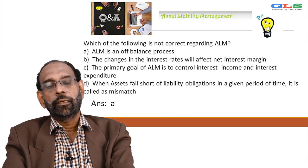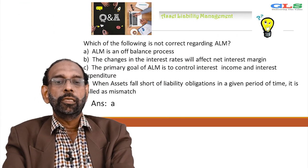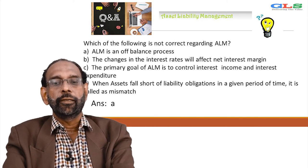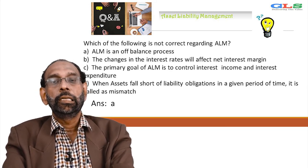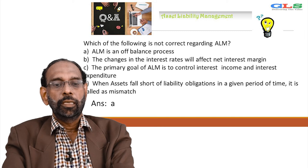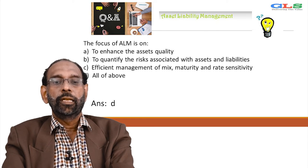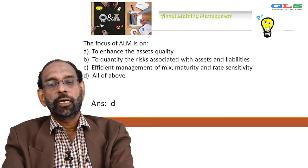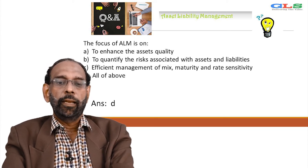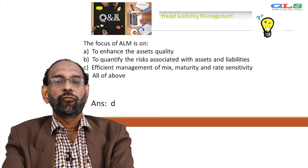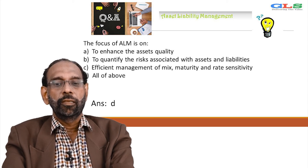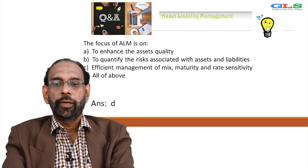Which of the following is not correct regarding ALM? A: ALM is an off-balance process; B: changes in interest rates will affect net interest margin; C: the primary goal of ALM is to control interest income and interest expenditure; D: when assets fall short of liability obligations in a given period of time, it is called mismatch. The answer is A — ALM is an off-balance process. The focus of ALM is on — enhancing asset quality, quantifying risk associated with assets and liabilities, efficient management of mix, maturity and rate sensitivity. Answer is D, all of the above.